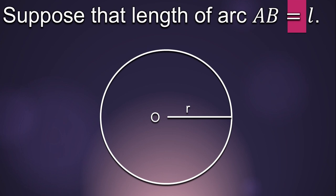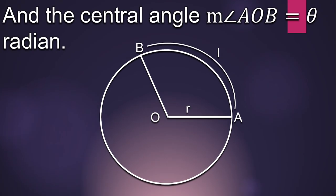Next, we draw an arc AB whose length is L. Now, the measure of the central angle that intercepts the arc AB is theta radian.